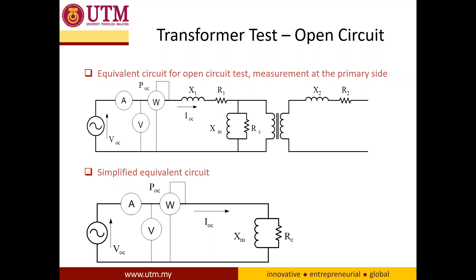This is the circuit configuration when you do the open circuit test. The measurement is done at the primary side and the secondary side is left open or no load. Because it is open circuit, the current I2 is 0. When I2 is 0, I1 prime is also 0, so I1 equals I1 prime and automatically becomes 0.